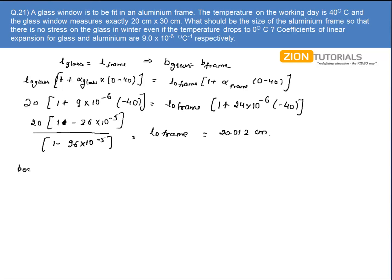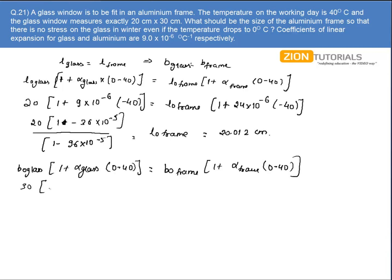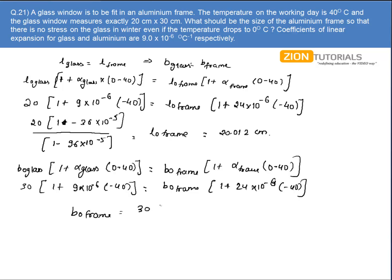Similarly for the breadth: initial breadth of glass times (1 + alpha of glass times (0 minus 40)) equals initial breadth of frame times (1 + alpha of frame times (0 minus 40)). Substituting the values, with alpha of aluminium as 24 × 10⁻⁶ and delta T of minus 40, and solving for the initial breadth of the frame, we get B₀ frame as 30.018 cm.